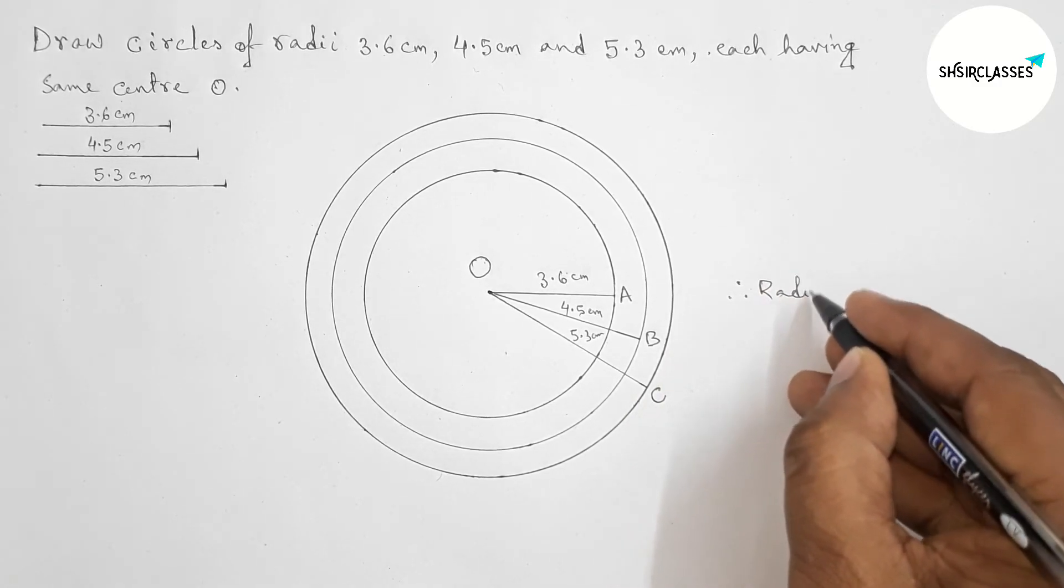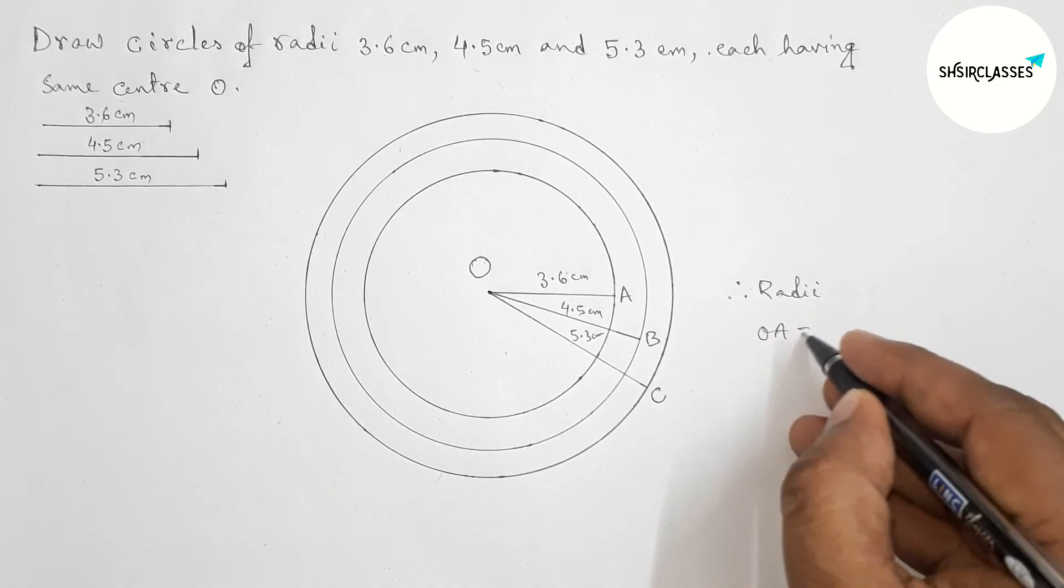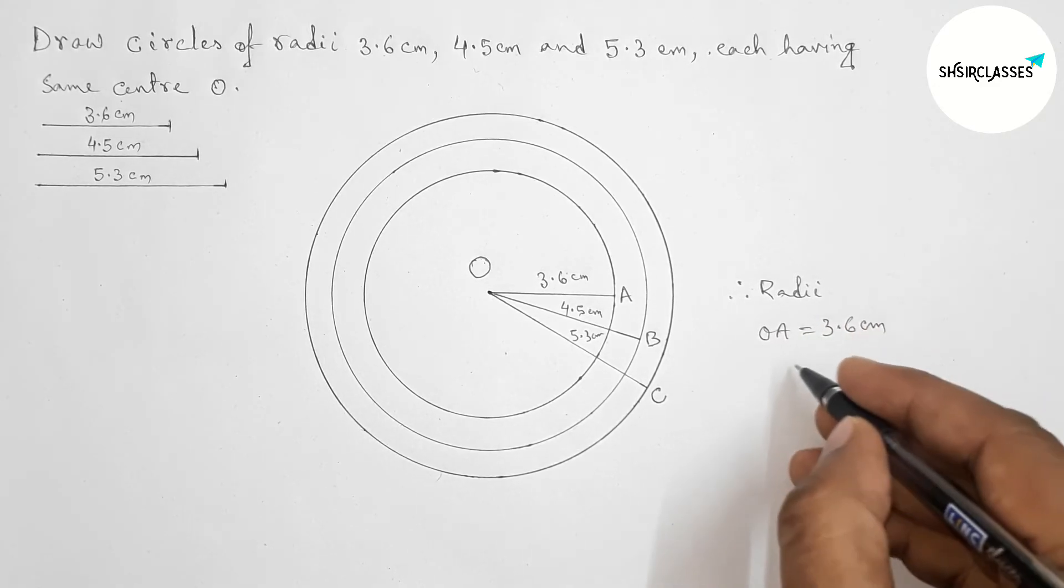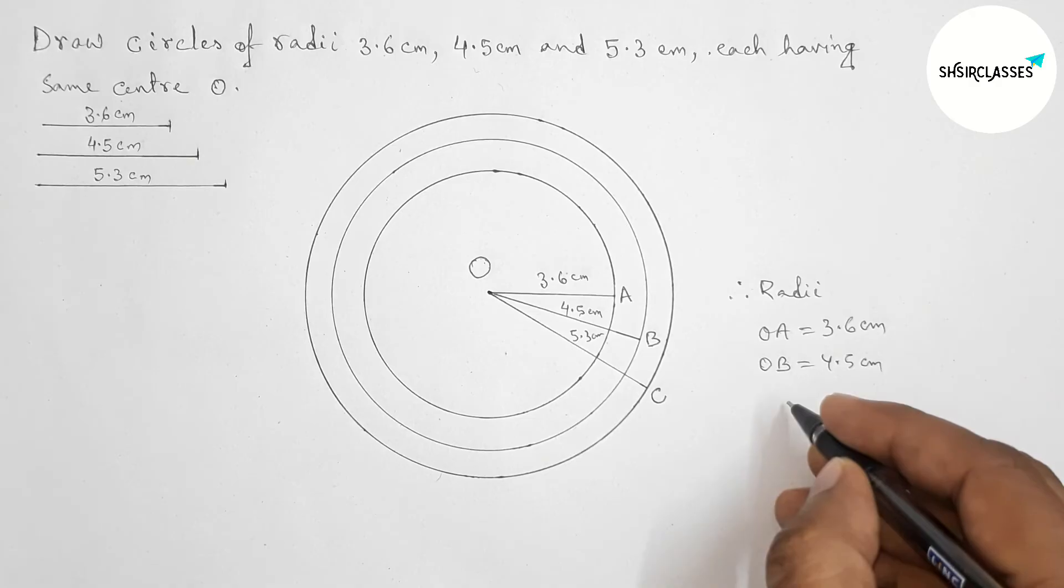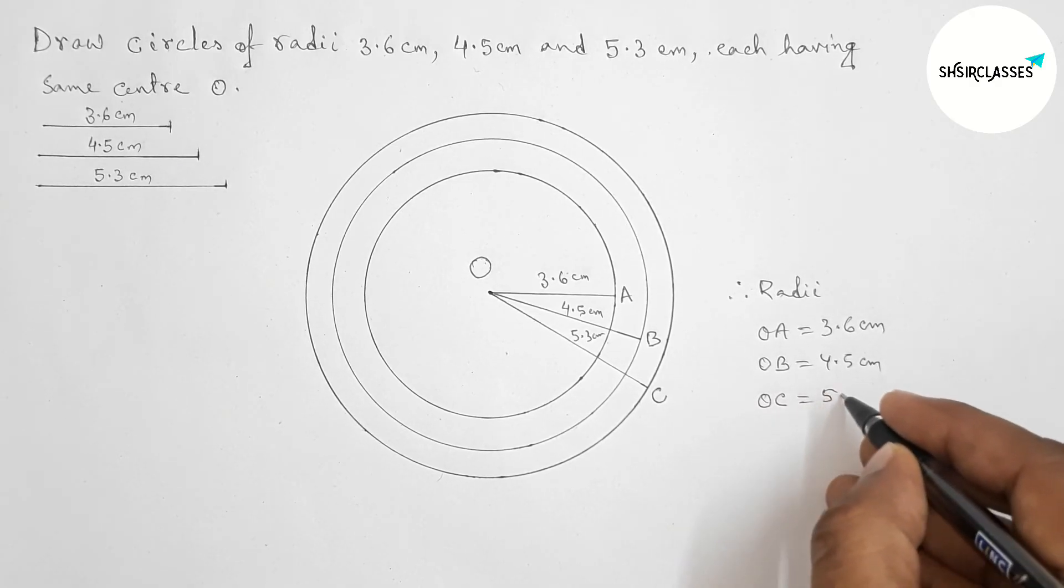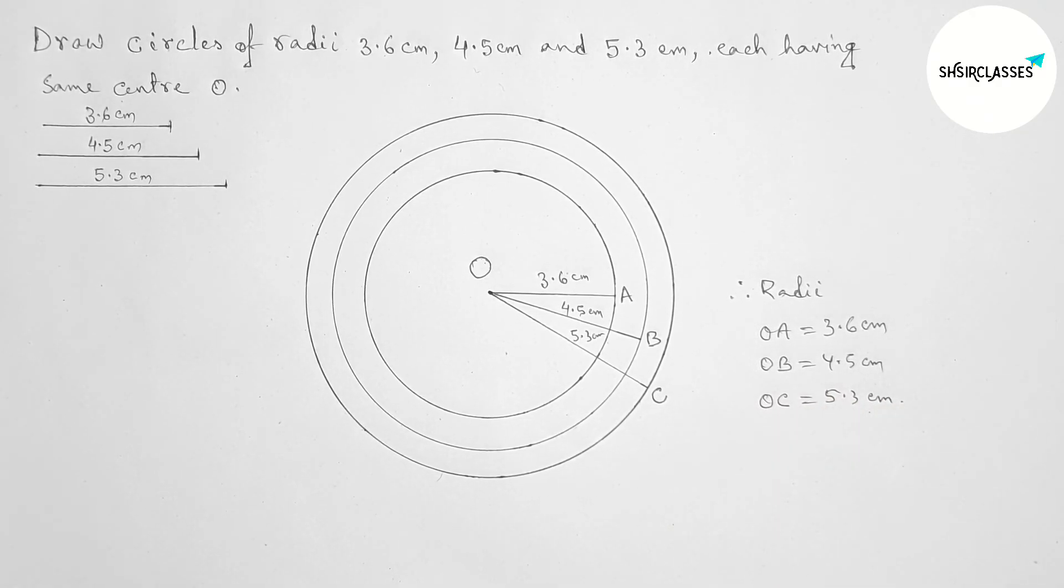We got our required concentric circles with three radii OA, OB, and OC. That's all, thanks for watching. Please share it with your friends.